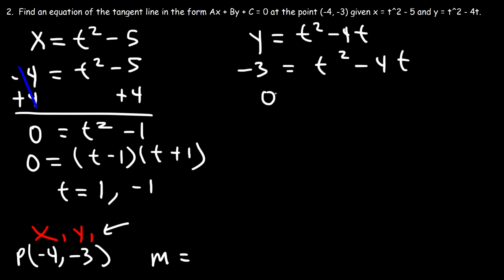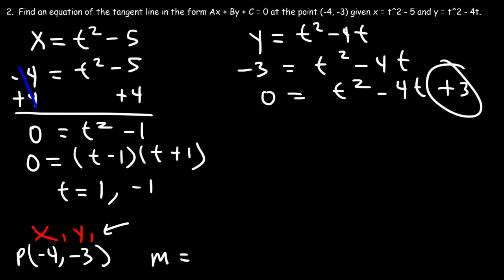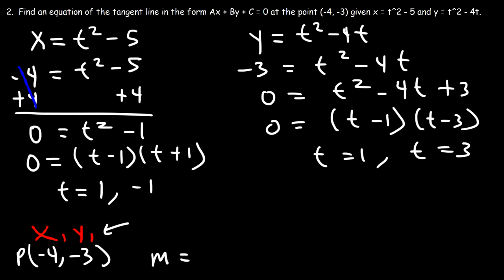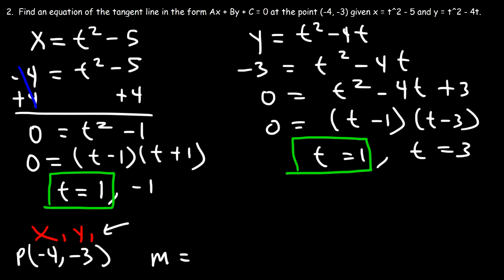Adding 3 to both sides, we have 0 equals t squared minus 4t plus 3. To factor this trinomial, we need two numbers that multiply to 3 but add to negative 4 — that's negative 3 and negative 1. So it factors as t minus 1 times t minus 3, giving t equals 1 and t equals 3. Now look for the common t value: t equals 1 in both cases, so this is what we'll use to calculate the slope.